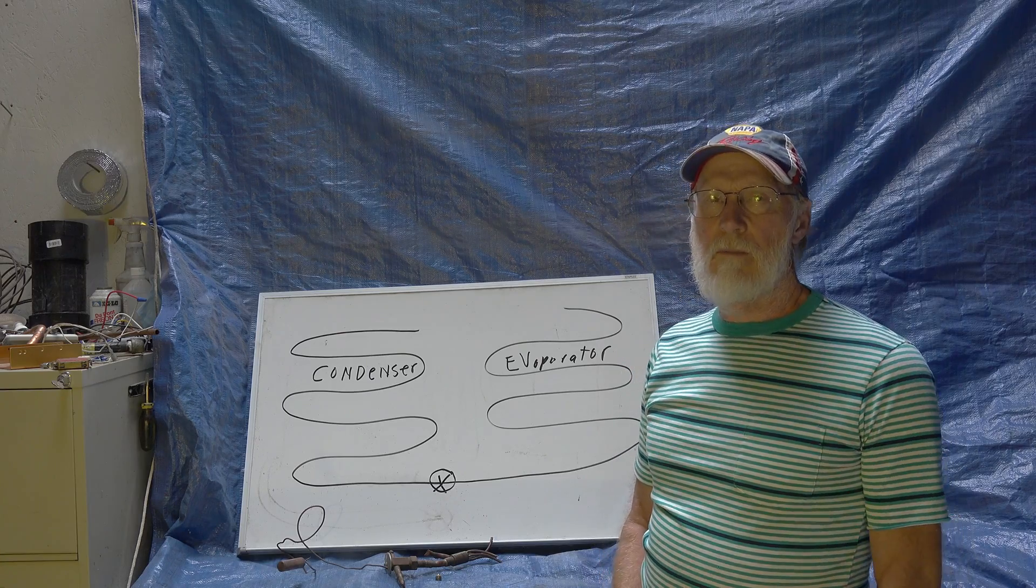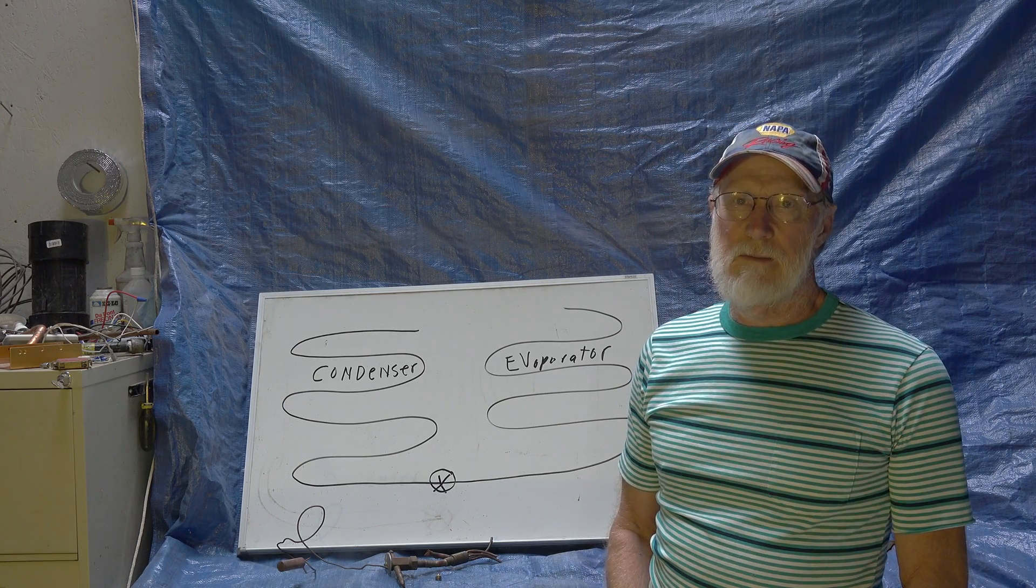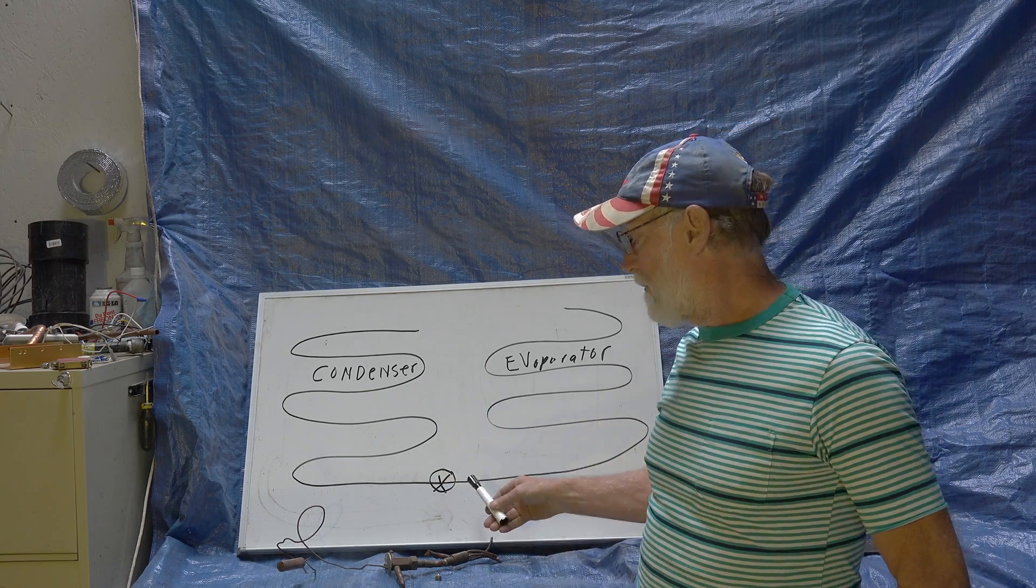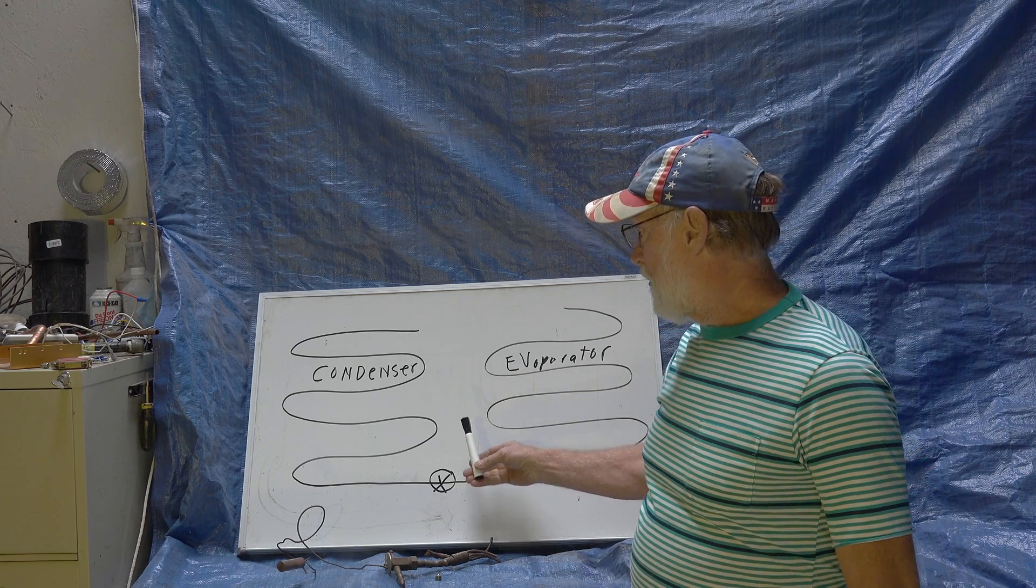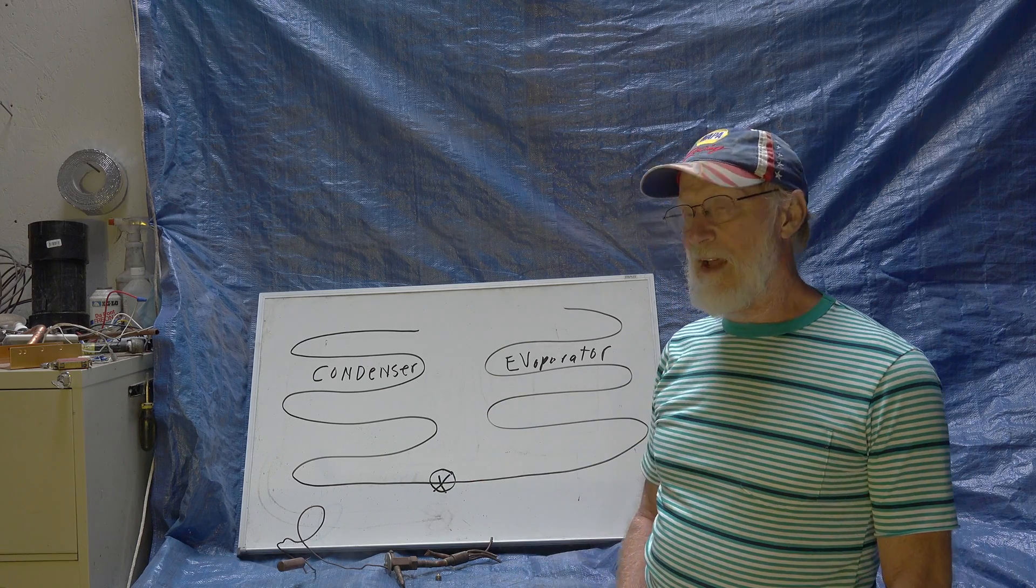In this one we're going to talk about what the expansion device does. I put up here a couple of other parts - I got the condenser and I got the evaporator up here, and I have an expansion valve right there.